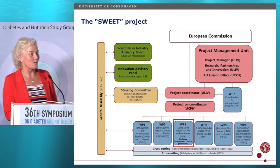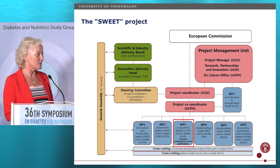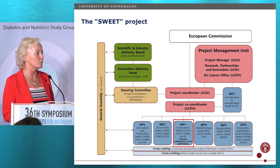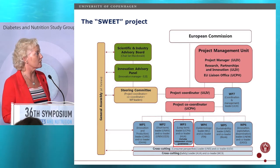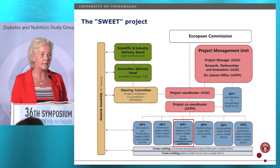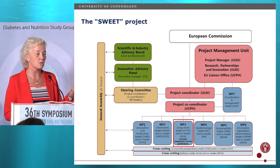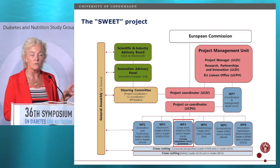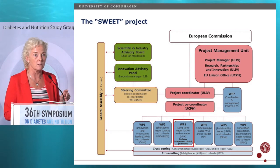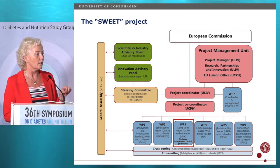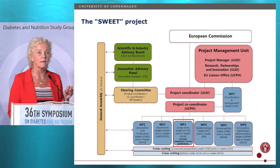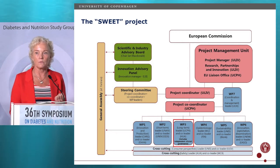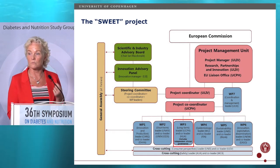We have organized the project with a scientific and industry advisory board headed by Ian McDonald, a project management unit, innovation advisory panel, steering committee, and coordinators. The different work packages focus on: innovation and production (WP1), short-term trials (WP2), long-term trials (WP3), epidemiological data (WP4), sustainability (WP5) — looking at whether it is more or less sustainable to use sugar than sweeteners or vice versa — and innovation and expectation (WP6), plus cross-cutting themes on consumer perspective and safety.